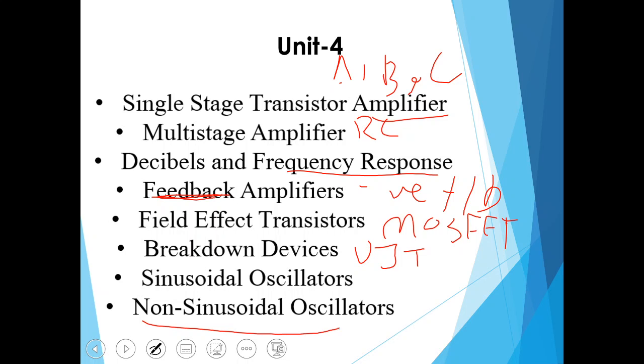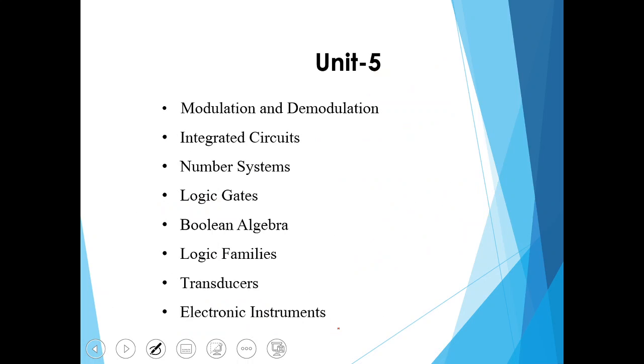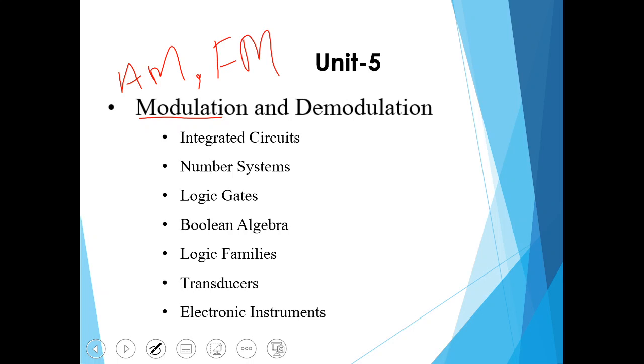Fifth unit is modulation and demodulation where we'll study about carrier wave, need for modulation, and different methods of modulation like amplitude modulation, frequency modulation, their comparison, AM transmitter, and FM receiver. Second topic in this unit is integrated circuit where we study about advantages of integrated circuit, scale of integration, classification, IC terminology, fabrication of IC component, applications of IC, op-amp.